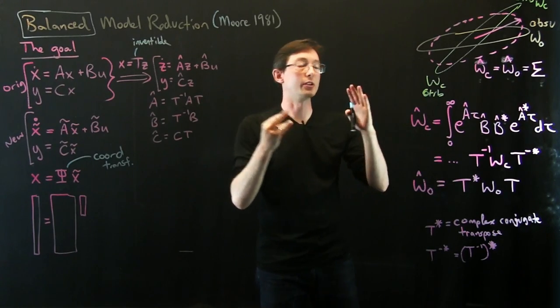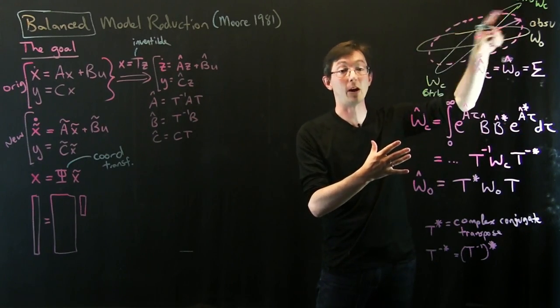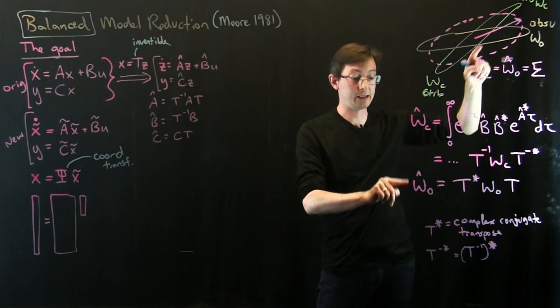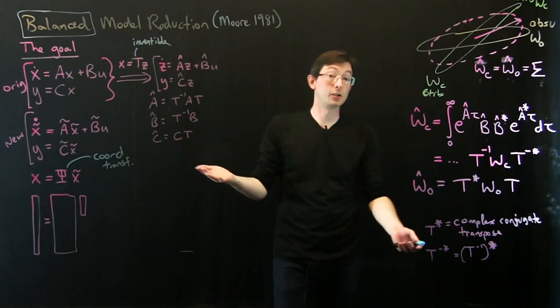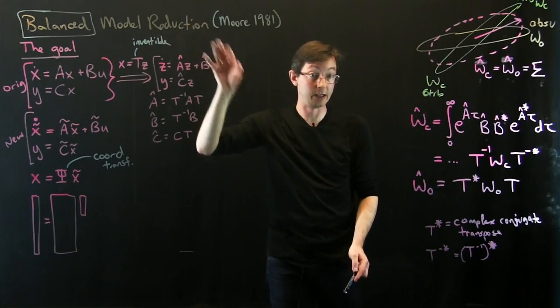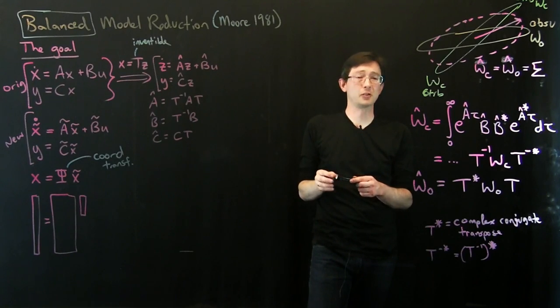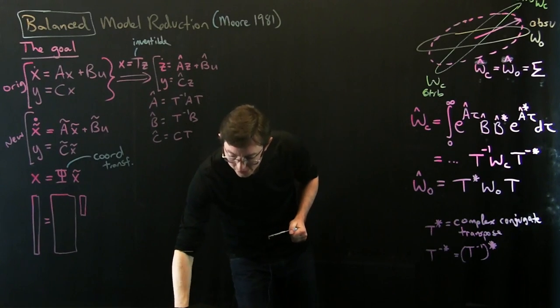Basically, he laid the foundation for the fact that there are these transformations that have this property of balancing my Gramians, making these equal and diagonal. And then he showed you how to actually do it with a real system. And then he showed us how to do it with data. So everything we're doing is kind of in the spirit of Moore 1981. I believe this is an IEEE Transactions on Automatic Control paper.